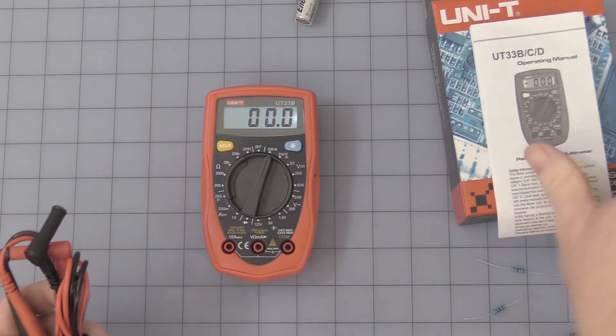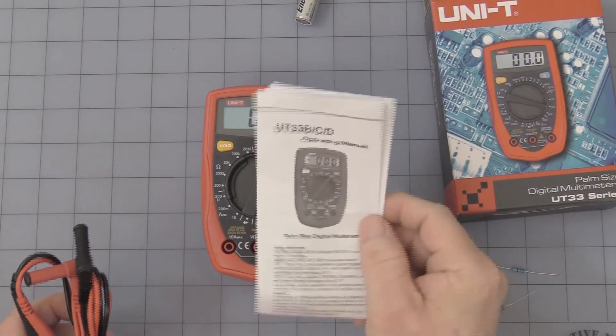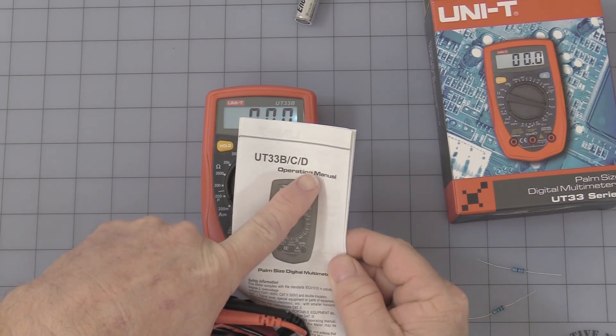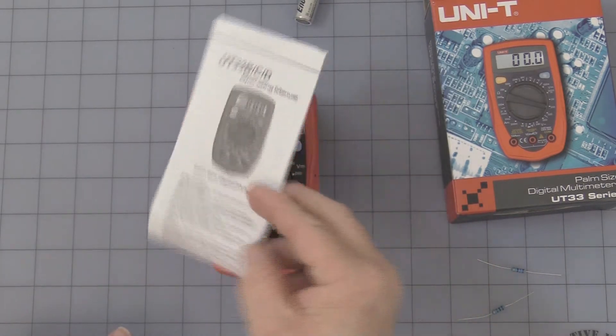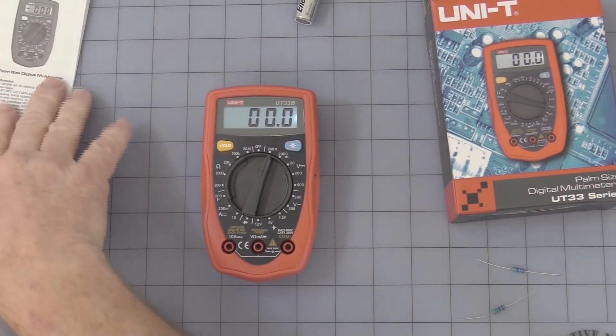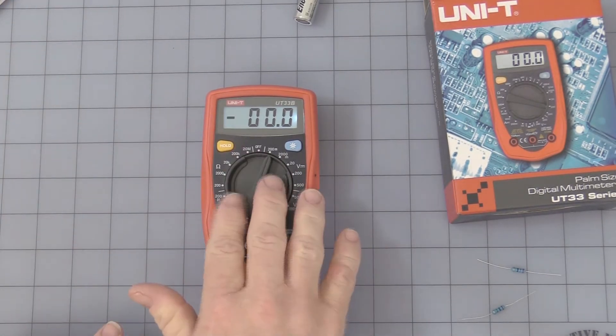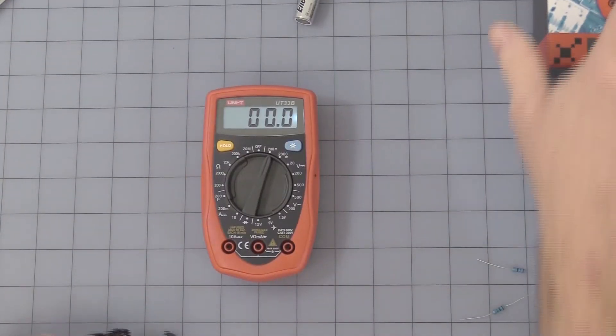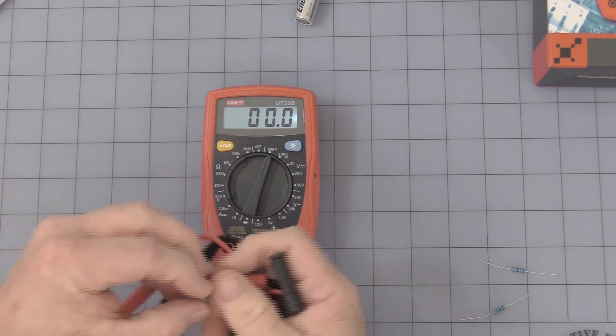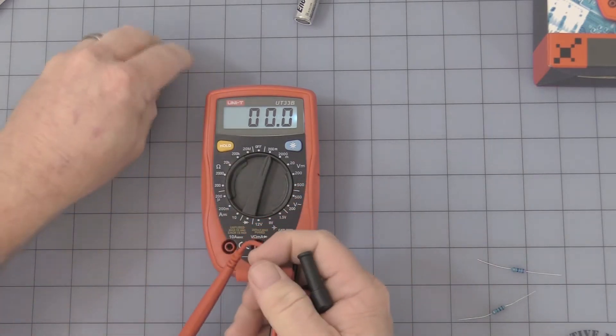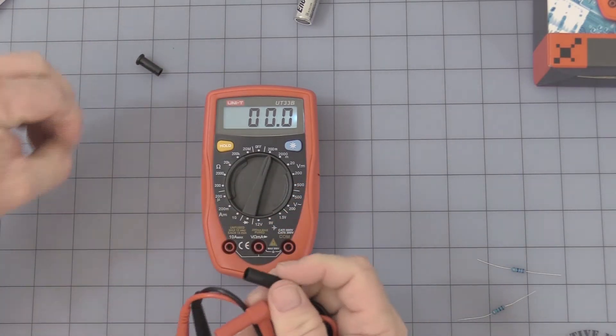Comes with the test leads, a manual. The manual covers the B, C, and D version. Be sure you understand that because you'll see functions for other meters that are not on this one. Comes in the box, and the test leads. Test leads have these nice little safety caps.